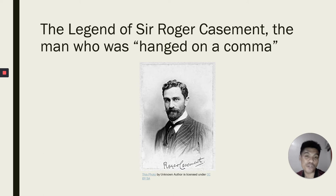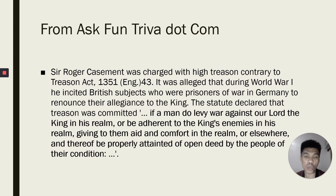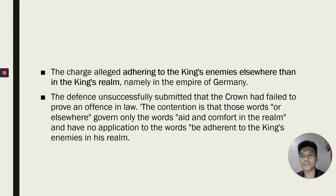Let me give you an example. And this is the legend of Sir Roger Casement, the man who was hanged on a comma. Sir Roger Casement was charged with high treason contrary to the Treason Act 1351. It was alleged that during World War I, he incited and convinced British subjects who were prisoners of war in Germany to renounce their allegiance to the king. The statute declared that treason was committed if a man do levy war against our lord the king in his realm, or be adherent to the king's enemies in his realm, giving to them aid and comfort in the realm or elsewhere, and thereof be properly attainted of open deed by the people of their condition.